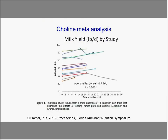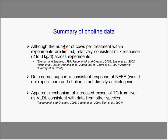Rick Grummer's meta-analysis work showed generally positive metabolic responses as choline was supplemented. To summarize choline: although the number of cows per treatment in many studies is limited, there are pretty consistent milk responses across experiments, though not always statistically significant. The data don't support that choline drops NEFAs — it's not directly anti-ketogenic, so you won't necessarily see reductions in BHBAs either. But you will see improved fat metabolism in the liver through enhanced VLDL export of triglycerides, consistent with data from other species.